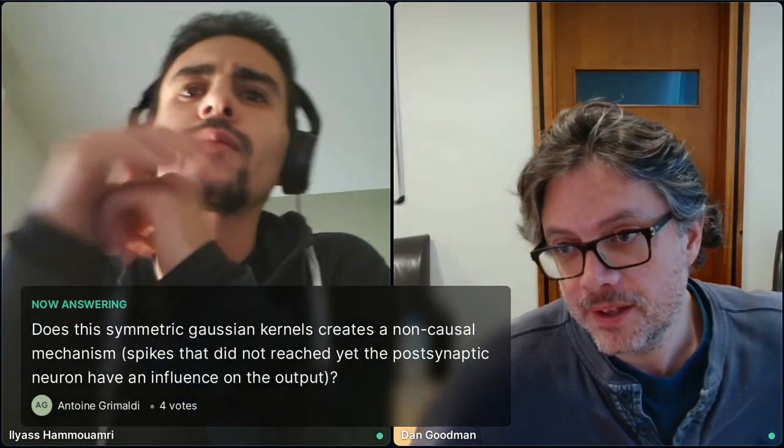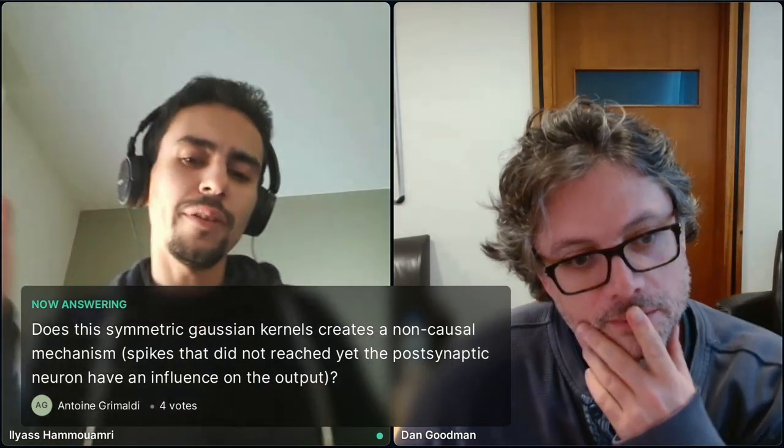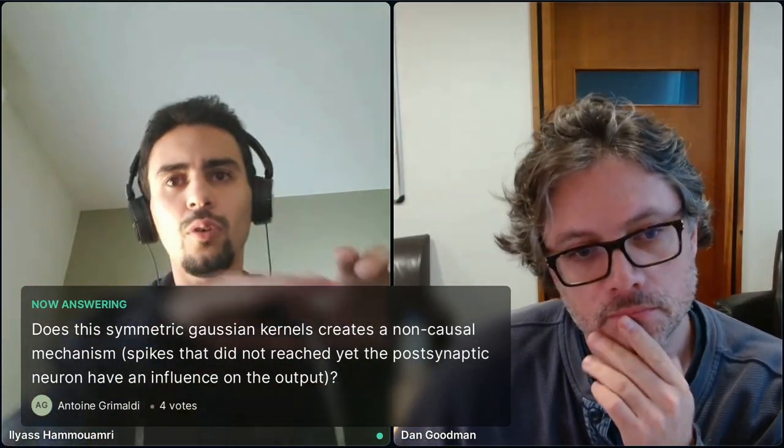Okay. Yeah. I mean, I guess your sort of Gaussian thing partly. Yeah. Foils the problem, right? Maybe that was our mistake was that we didn't do that. Yeah. Cool. All right. Let's go to the next question here. We've got tons of questions, so there's no shortage here. So, does the symmetric Gaussian kernels create a non-causal mechanism? Spikes that did not, haven't reached the postsynaptic neuron do have an influence on the output. Yes, exactly. They do have an influence and the weight is distributed over the whole temporal kernel. And I think this is a good thing.